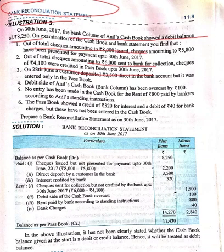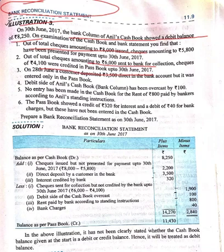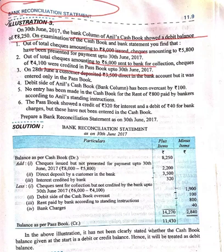On 28th June, a customer deposited 3,500 directly in the bank account, meaning 3,500 is being credited in the bank — we will add this. The debit side of Anil's cash book has been overcast by 100 rupees, meaning we thought 100 rupees was excess in the bank, but in reality the bank account was not credited by this 100 rupees, so we will subtract it.